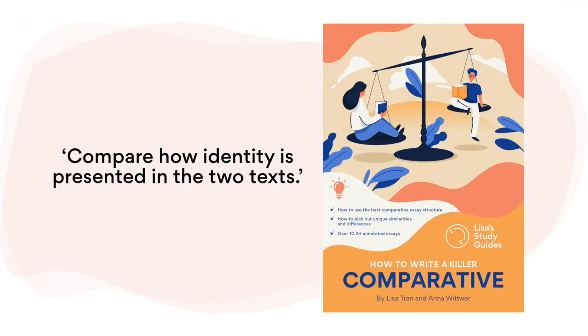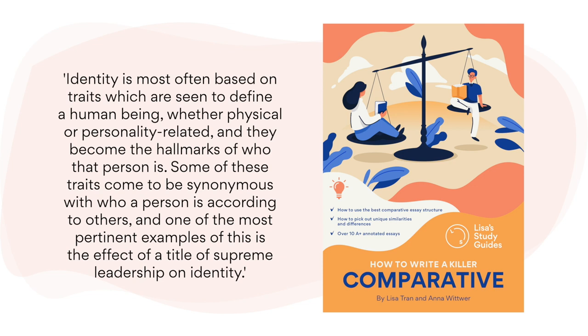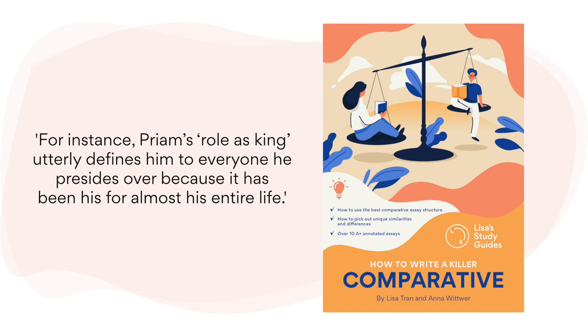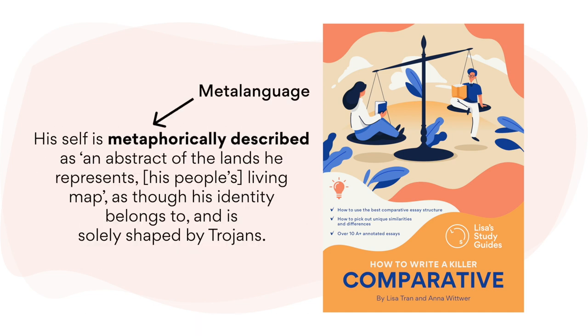So how can you tie film techniques and literary devices together in an essay? Here's an example using Ransom and The Queen, based on the topic: compare how identity is presented in the two texts, which I've pulled from our How to Write a Killer Comparative ebook. Identity is most often based on traits which define a human being — whether physical or personality related — and they become the hallmarks of who that person is. Priam's role as king utterly defines him to everyone he presides over, because it's been his for almost his entire life. His self is metaphorically described as an abstract of the land he represents — his people's living map — as though his identity belongs to and is solely shaped by Trojans.